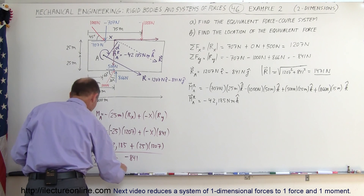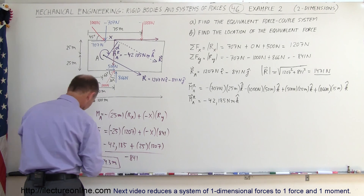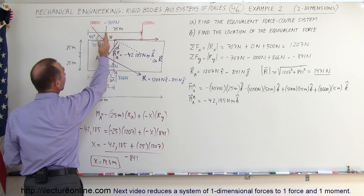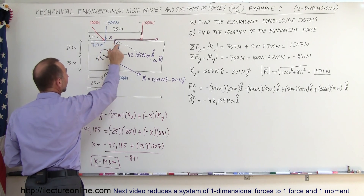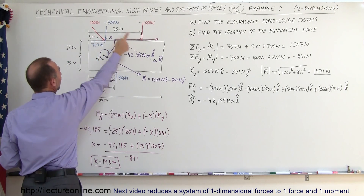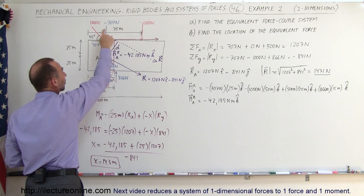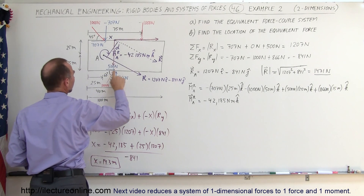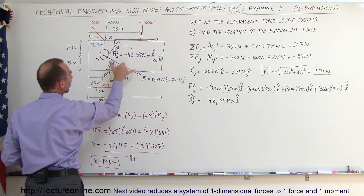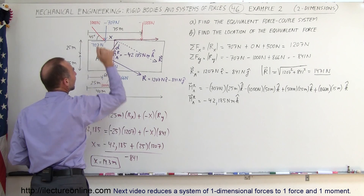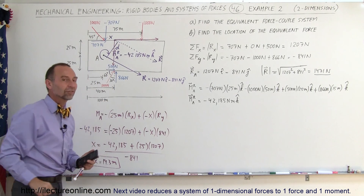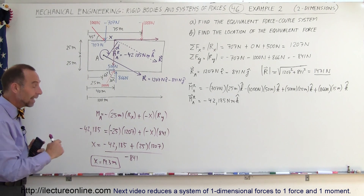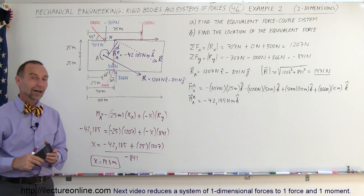Placing the resultant force 14.3 meters from that reference point allows us to replace the entire system — all three forces — with a single resultant R. The moment is automatically accounted for by placing R at this exact location, and that's how the equivalent single-force replacement is done.